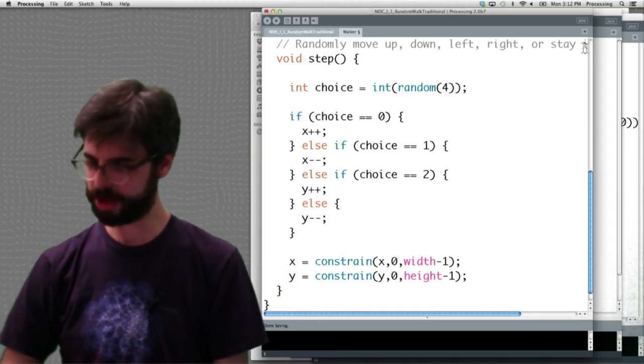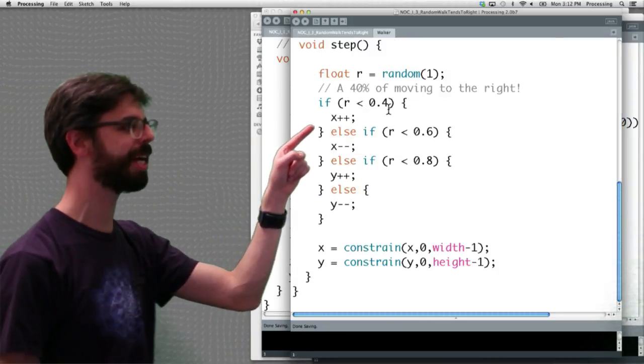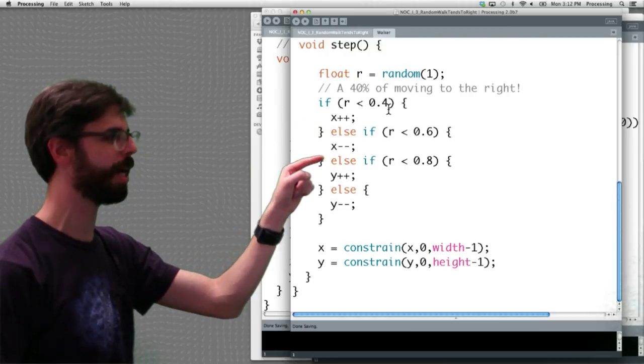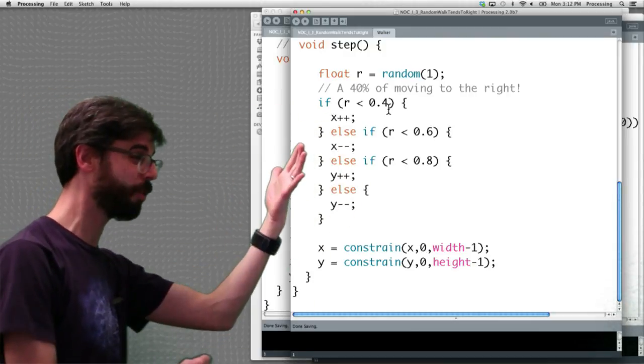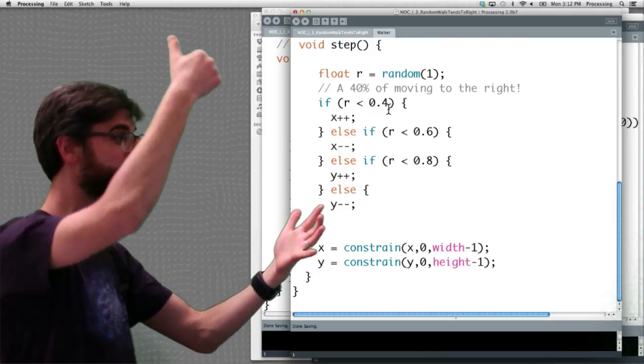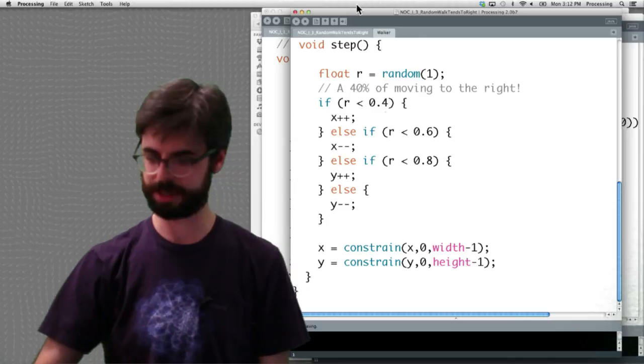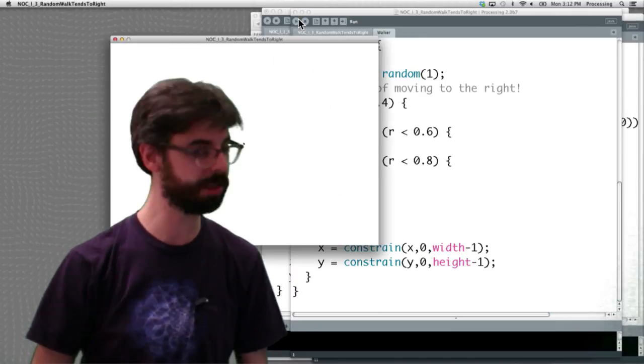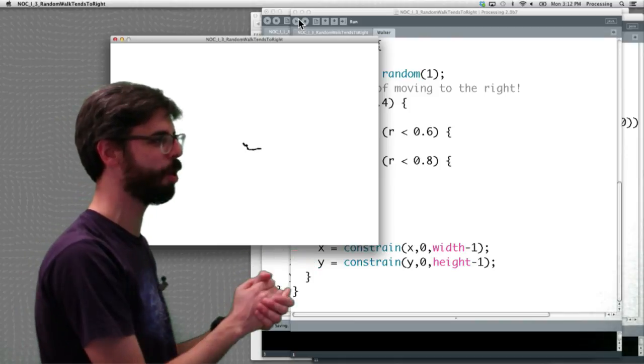And if I go to this particular example, we can say what if that random number we pick, it's less than 0.4, go to the right. It's less than 0.6, go to the left. These are slightly different probabilities. 40% of going to the right, 20% going up, 20% going down, and 20% going back to the left. And if I run this, we'll see what this random walker does. We can see it's generally speaking going to the right.